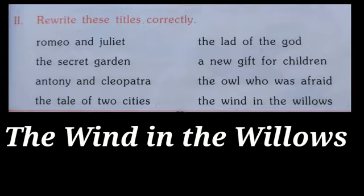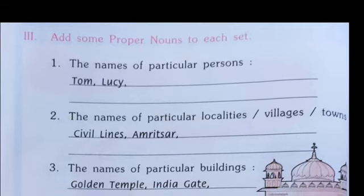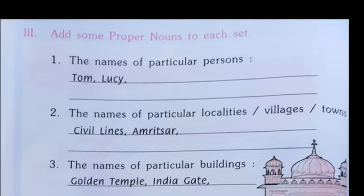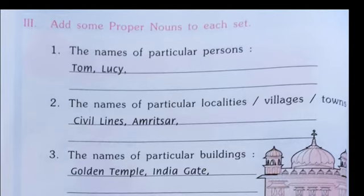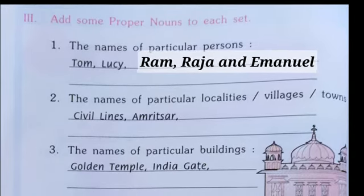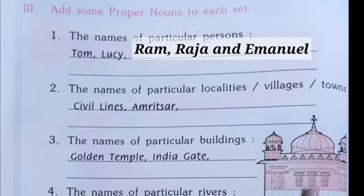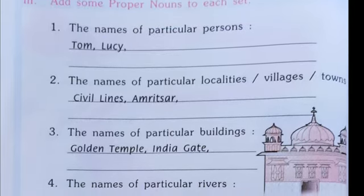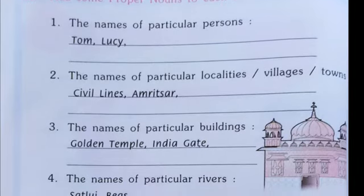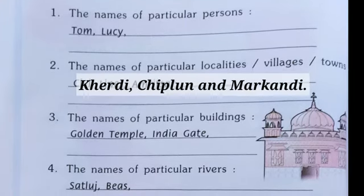Lastly, the title of the book 'The Wind in the Willows' will have the first word 'The' with capital T, and W in 'Wind' and 'Willows' also in capital letters. In the next question, we have to add to the list. For names, we can add Ram, Raja, Emmanuel, along with Tom and Lucy. For villages or localities like Civil Lines and Amritsar, we may add Kerdi, Chiploon, and Mercantile to the list.